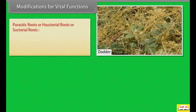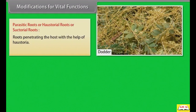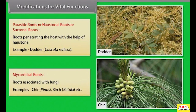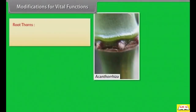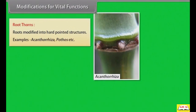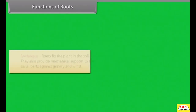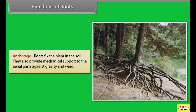Parasitic roots, also called haustorial or suctorial roots, penetrate the host with the help of haustoria. Example: Dodder. Mycorrhizal roots are roots associated with fungi. Examples: chir, birch, etc. Root thorns are roots modified into hard pointed structures. Examples: Iriartea and others.